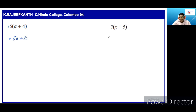Then, the second one. Here also, there are two terms: x and 5. So, we have to multiply each term by 7. Then, 7 into x is 7x, plus 7 into 5 is 35.